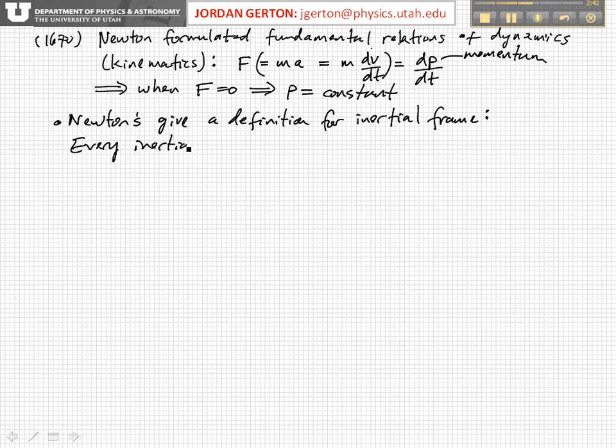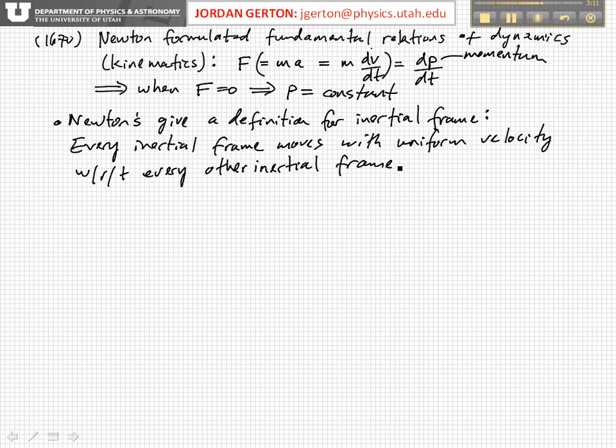And that is that every inertial frame moves with uniform velocity, that's constant velocity, with respect to every other inertial frame. Now, this sounds a bit circular, but again, it's a relative thing. You define motion basically with respect to other objects that are in motion, possibly. So this is a good definition for an inertial frame.